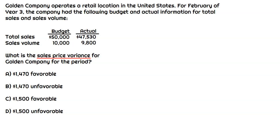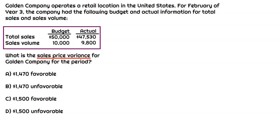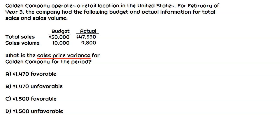In this question, we're focused on the sales price variance for Golden Company. If we look at all the information given, they give us the budget and actual information for sales and sales volume, but we don't have the individual sale price per unit from a budget and actual perspective. And we're going to need that because those are key inputs to the sales price variance calculation we need to perform.